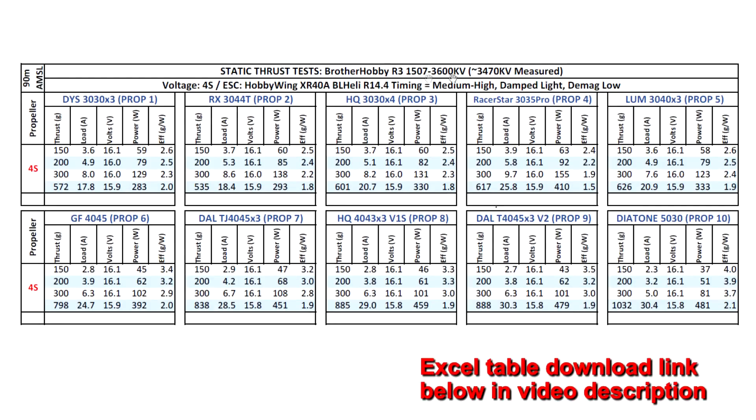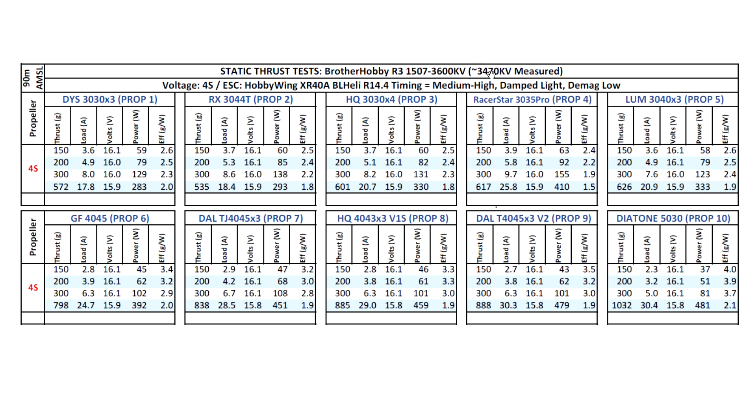Alright, so here are the thrust test results for the Brother Hobby R3 1507 3600 kV, new motor from Brother Hobby. The motor came in at 3470 kV, so lower than the spec 3600 kV, pretty similar to the 1407, which measures lower than the 3600 kV. So I went ahead and tested on 4S, the usual props, plus a couple of new ones, the Rotor X 3044T and the Resistar 3035 Pro.